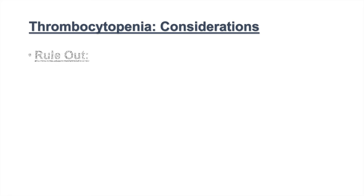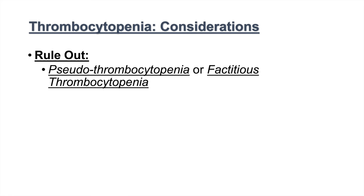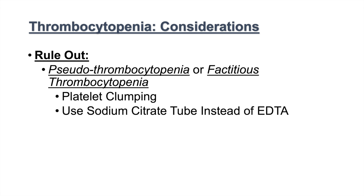An important consideration is to rule out pseudothrombocytopenia, also called factitious thrombocytopenia. This occurs when platelets in some patients have a propensity to clump in the sample tube, causing a falsely decreased thrombocyte count — it looks like thrombocytopenia, but the platelets are simply clumping. An easy way to avoid this is to use sodium citrate tubes instead of EDTA.